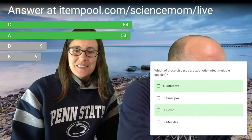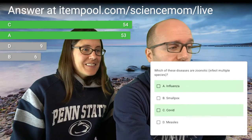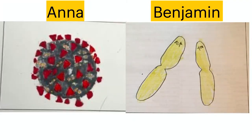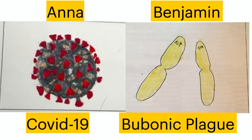I have a challenge for Science Mom. Anna and Benjamin submitted some art, and your challenge is to identify the microbe. I think this is COVID that Anna drew, and then Benjamin's drawing — I'm going to guess a type of yeast, a fungus that is budding, maybe? You were correct on Anna, but Benjamin's was bubonic plague. Excellent choice of disease organisms.